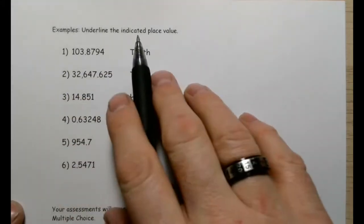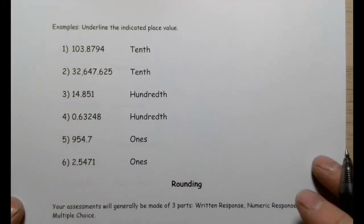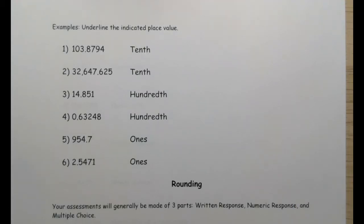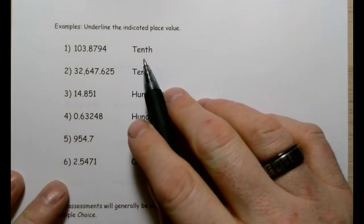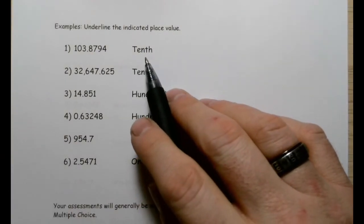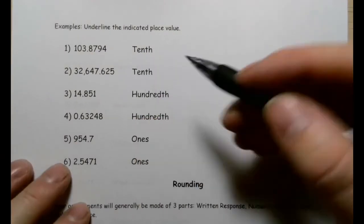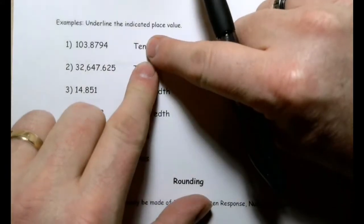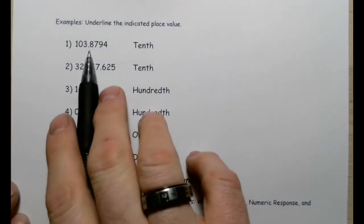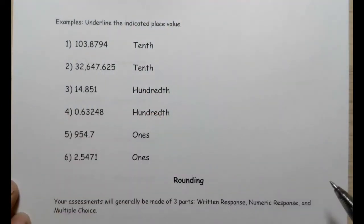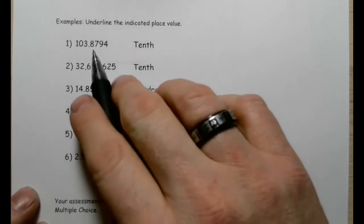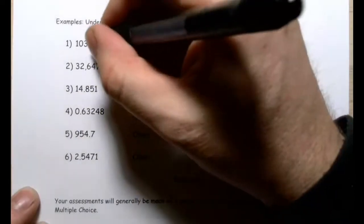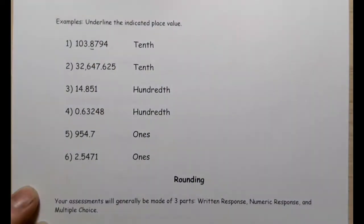This question says: underline the indicated place value. So we just identify what number is in the indicated spot. For 'tenth' — remember, once we add 'th' to the end, we're referring to numbers to the right of the decimal. And because there's no 'ones' position, we jump immediately to the tenth. So the eight here is in the tenth position.